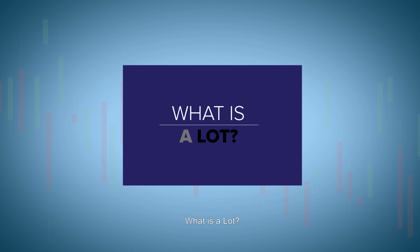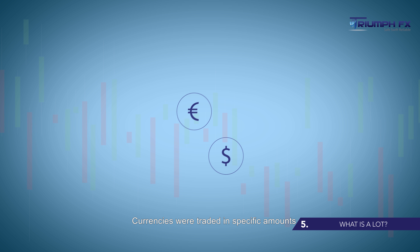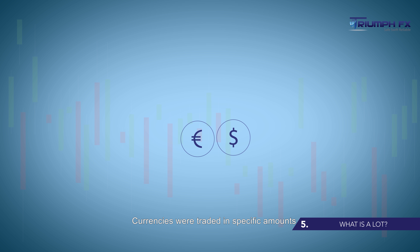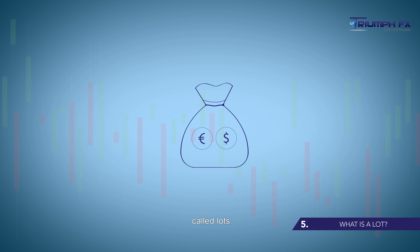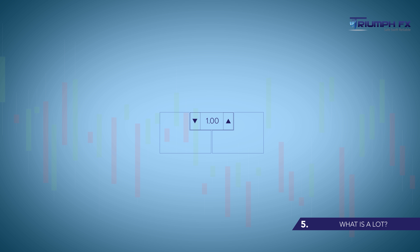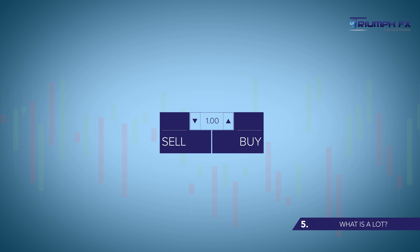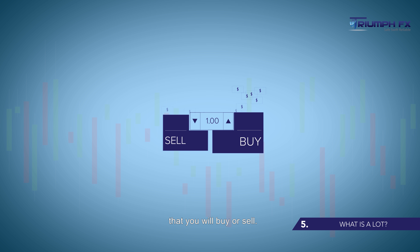What is a lot? Currencies were traded in specific amounts called lots. It is the transaction size in a forex transaction, which means the number of currency units that you will buy or sell.